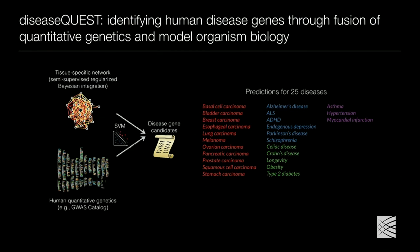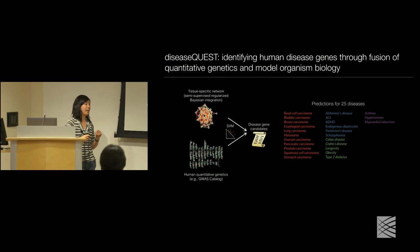To assign SNPs to genes, we take GWAS catalog reported genes — for each GWAS the authors report genes they think have been implicated — so we don't have to deal with the SNP-to-gene assignment problem. Our tissue networks actually perform very well in predicting disease genes based on this human GWAS data. One of the diseases in my list was longevity — our aging collaborators think people should consider it as such.